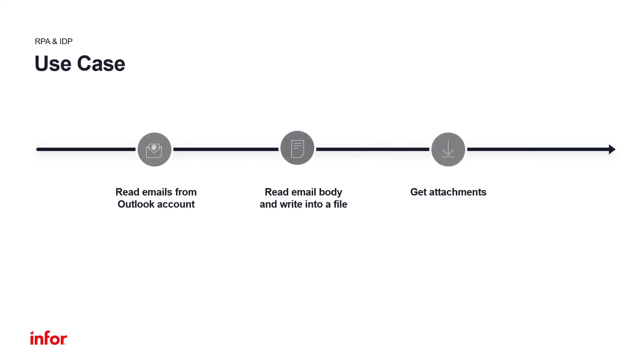For today's use case, we want to build a flow that one by one reads emails from an Outlook account and for each email, it will write its mail body into a text file and download the email attachments to a specified folder.